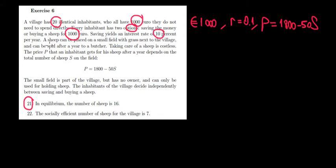The interest rate is 10 percent. A sheep can be placed on a small field with grass and then can be sold. The price function for the sheep is P = 1800 - 50S. The inhabitants of the village decide independently between saving and buying a sheep. In equilibrium, what's the number of sheep?